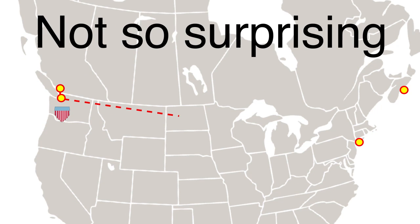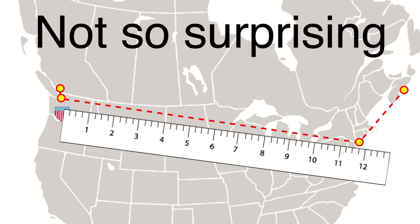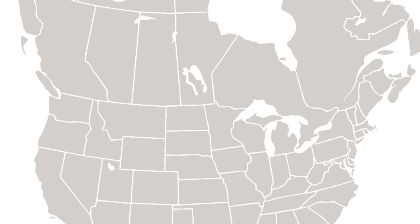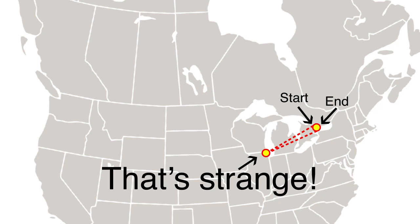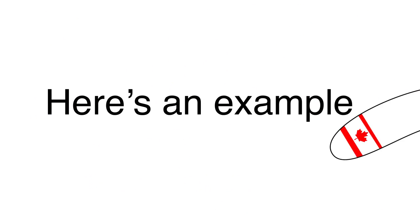It isn't too surprising that traffic from one Canadian coast to another passes through the US, as there's more capacity south of the border and the route isn't much longer. What is more startling is that data packets that start and end their travel in the same city can often take the same boomerang route. Let's take a look at one particularly striking example.